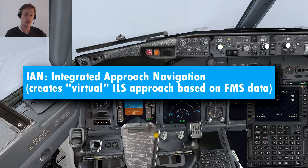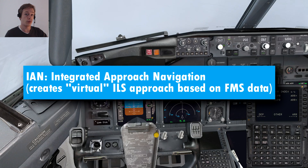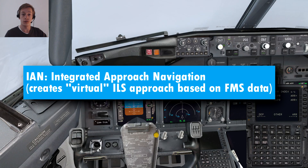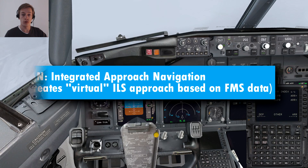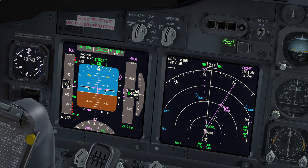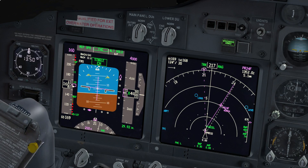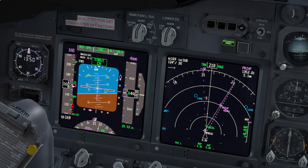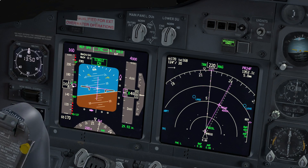So what it will do is use the data from the FMC — like the LNAV and VNAV data — to create an artificial localizer and an artificial glideslope. In that way you can just use the normal approach functions and see the normal approach indications on the PFD, which makes it a whole lot easier.